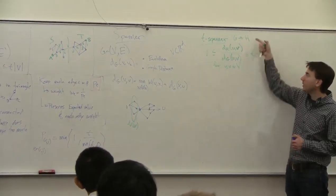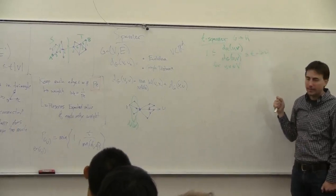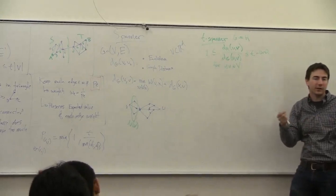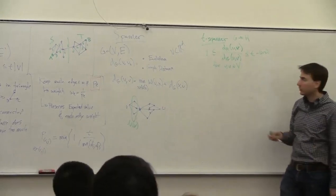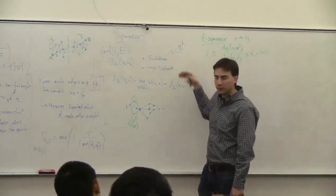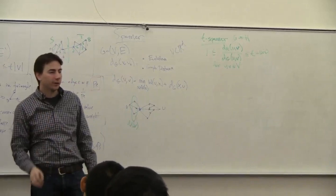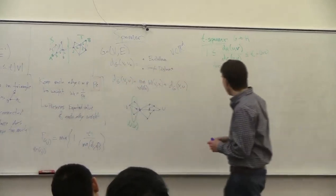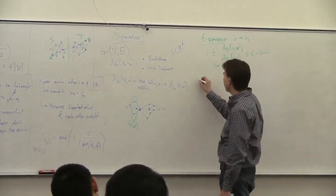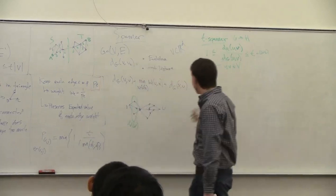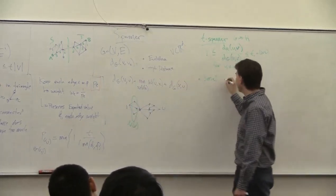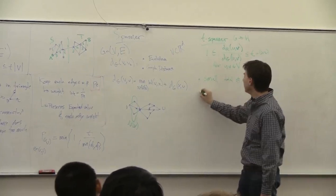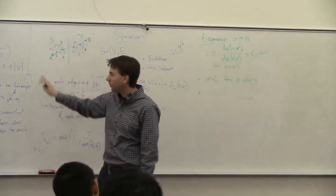One question is how few edges I can use to represent this graph. I can start with a graph that may have been a complete graph and then calculate Euclidean distances. Much of the study is when the original distance is Euclidean — you want to create a small graph that represents all the Euclidean distances. There are a few properties people try to preserve: it's not just minimizing the number of edges.